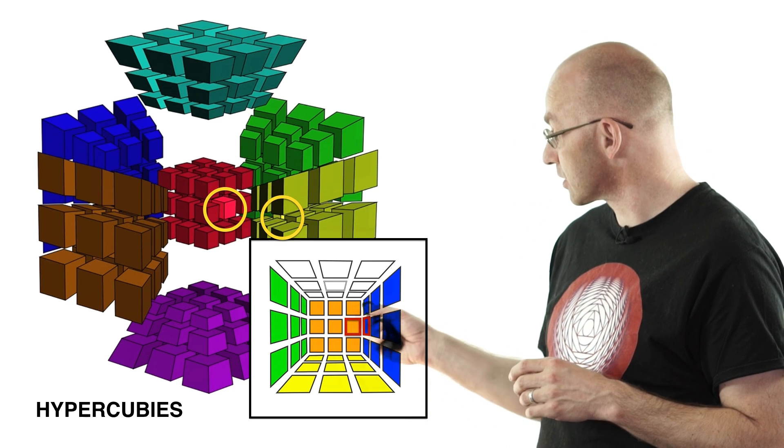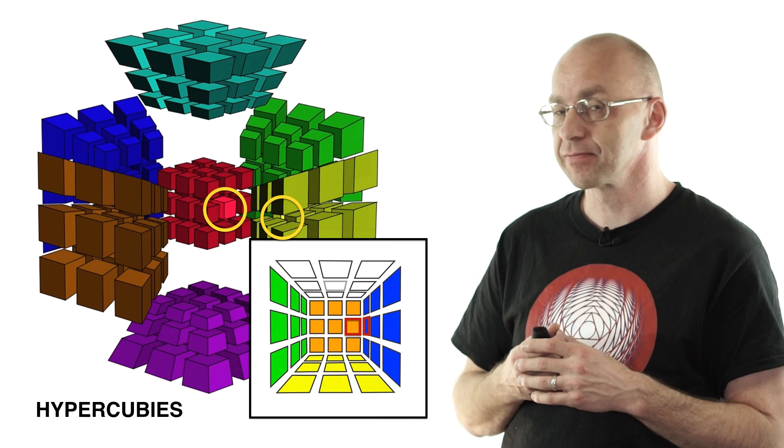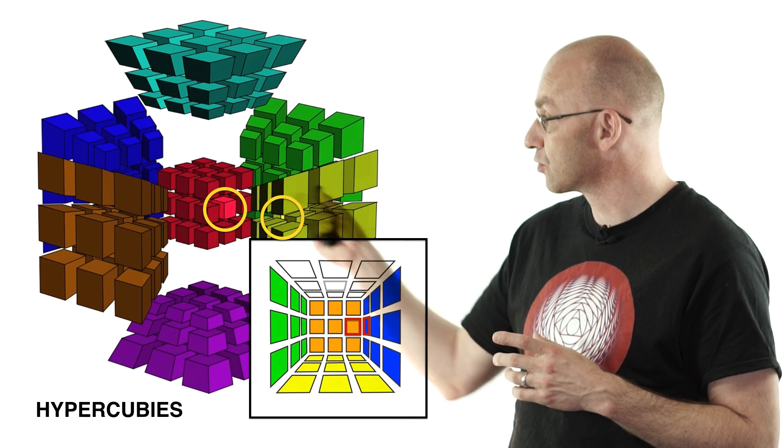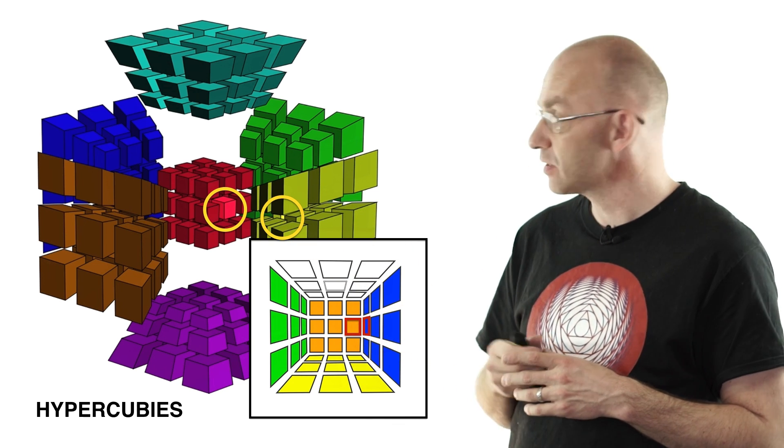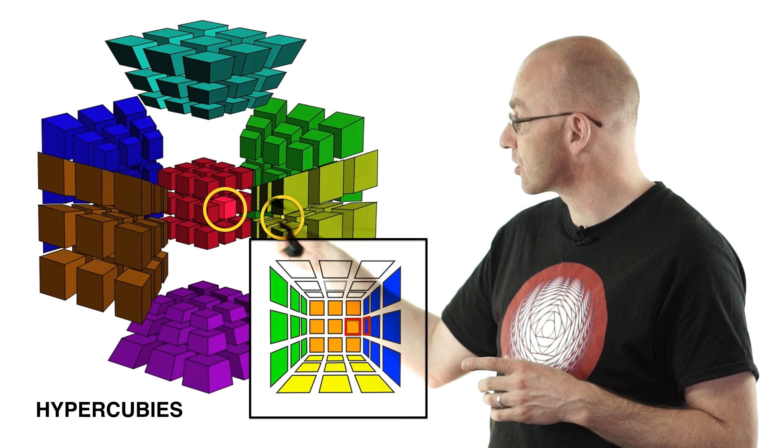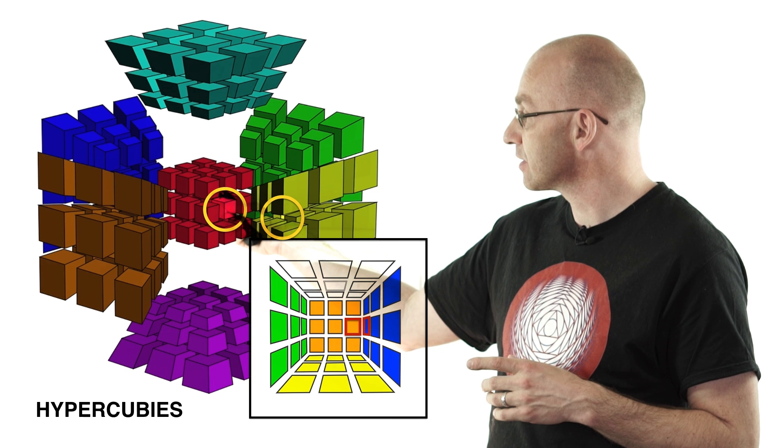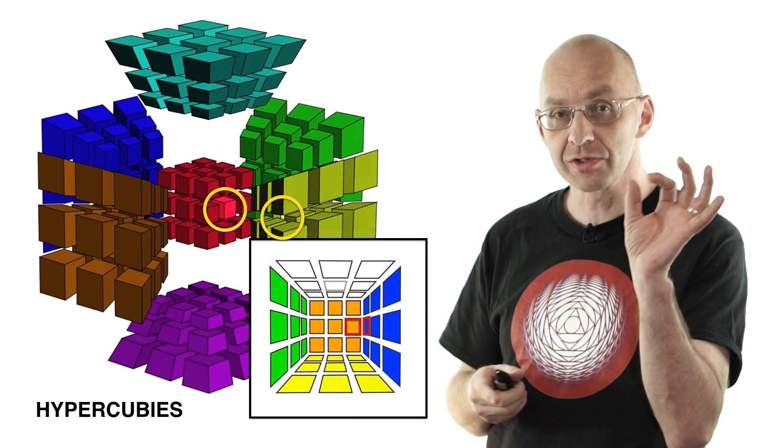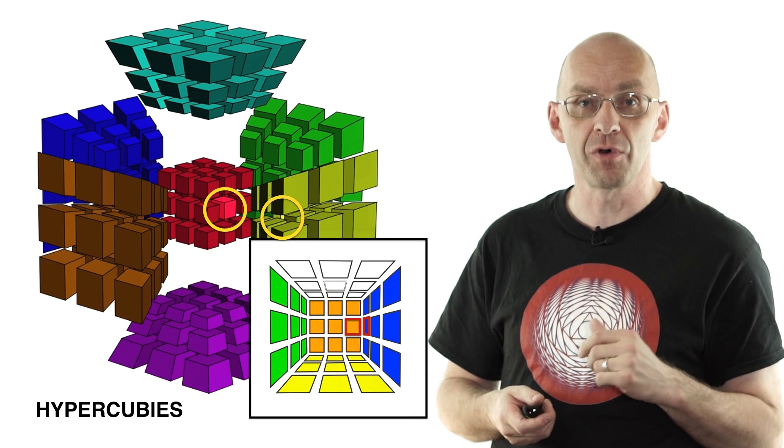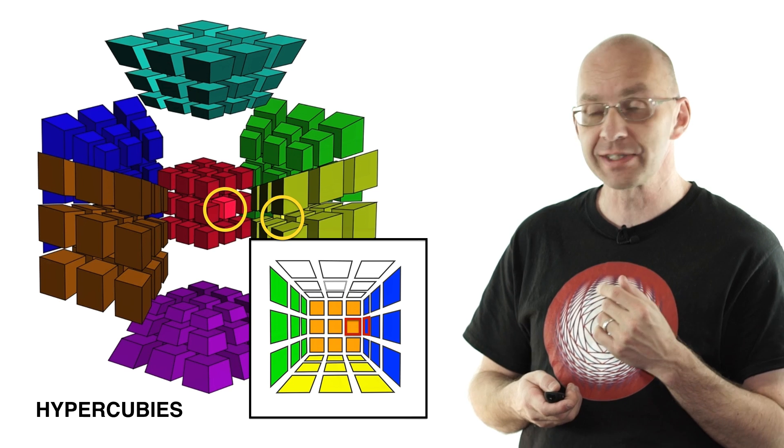Now we've got cubies that have two stickers. We also have cubies that have two stickers in the four-dimensional cube. Here it's edge cubies, there it's face cubies. So see those faces of those little cubes? Well, the sticker, there's one sticker, there's another sticker here right opposite. Those belong together. They basically form one hypercubie, face hypercubie.